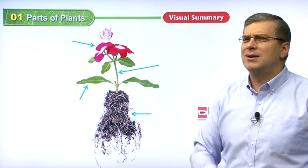Number two: the stem of a plant carries — A, water and food; B, air and light; or C, soil and ground? Does the stem carry air and light? No. What the stem does is carry water and food from the roots up to the rest of the plant. So the correct answer is A — the stem of a plant carries water and food.